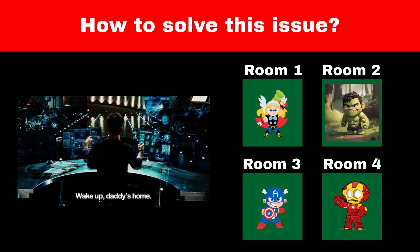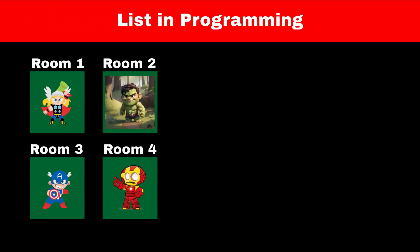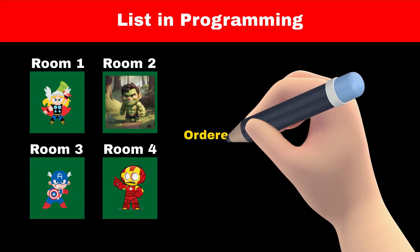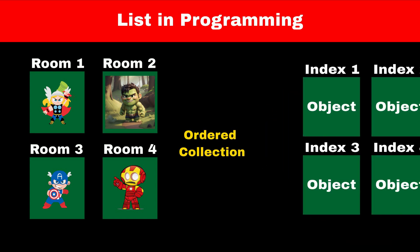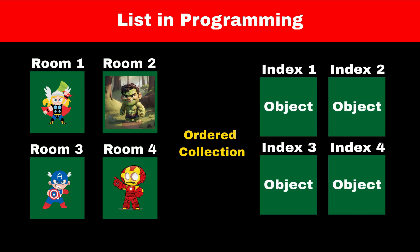In programming, a List is a data structure which works similar to how Jarvis assigns room numbers to Avengers. A List is an ordered collection of elements, and each element in the list has an index. We can access any element in a list by using its index, just like Jarvis stores Avengers in rooms and a List stores objects at some index.